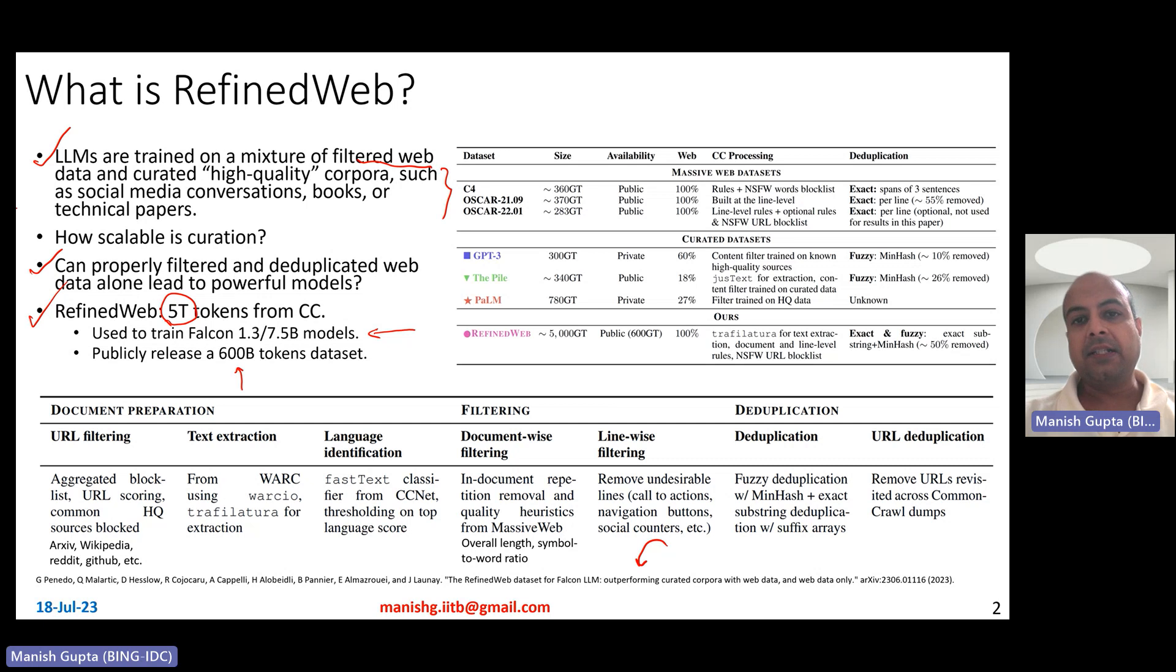Let's look at how this data compares with other datasets. RefinedWeb is right there. From a size perspective, the dataset is about 5 trillion tokens or essentially about 5,000 giga tokens. It is publicly available - a small part of it is publicly available. If you compare it with other datasets, there is C4 dataset, which basically contains about 360 giga tokens and it's also public. There are public datasets of around that size, 360 giga tokens, 370 giga tokens, 283 giga tokens and so on. Then there are private datasets which have been used to train GPT-3 and also pre-trained PALM model. Their sizes are known, but then those datasets are not public. There is the pile dataset, which is 340 giga tokens public dataset.